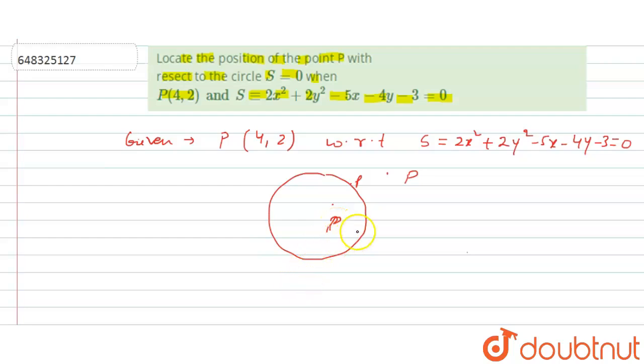So we have 3 conditions. If P(x₁,y₁) such that S(x₁,y₁) > 0, it means lie outside the circle. When you plug the given point into the equation of the circle and if it is coming greater than 0, it will lie outside the circle.